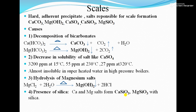The first cause of scale formation is decomposition of bicarbonates. If temporary hardness salts like calcium bicarbonate and magnesium bicarbonate are present, on heating they produce precipitates of calcium carbonate and magnesium hydroxide that stick to the boiler metal. The second cause is the decrease in solubility of salts like calcium sulfate — at 15°C, calcium sulfate has a solubility of 3200 PPM, which reduces to 55 PPM at 230°C.